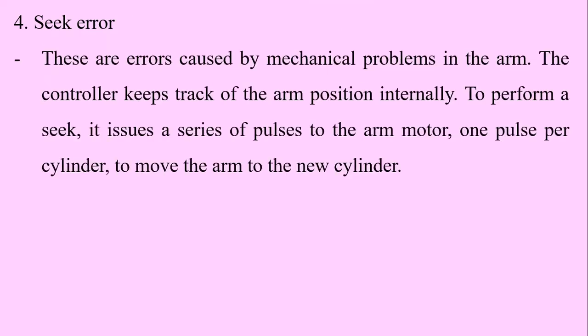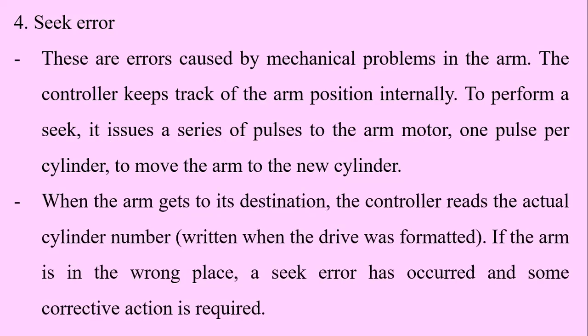Number four, the fourth type of error is called a seek error. These are errors caused by mechanical problems in the arm. The controller keeps track of the arm position internally. To perform a seek, it usually issues a series of pulses to the arm motor — one pulse per cylinder — to move the arm to the new cylinder. When the arm gets to its destination, the controller reads the actual cylinder number that was written when the drive was formatted.